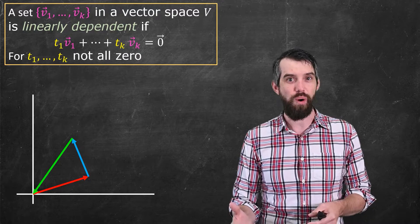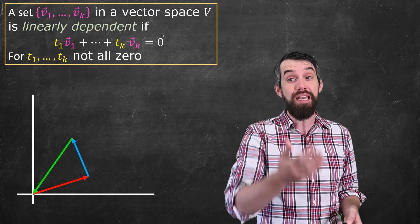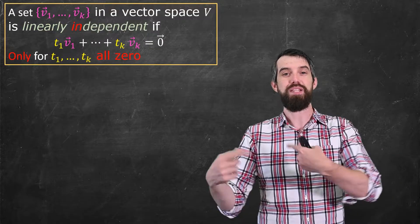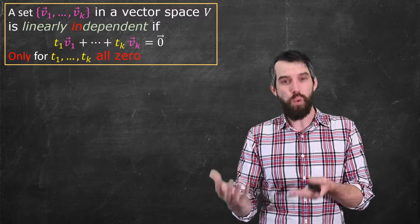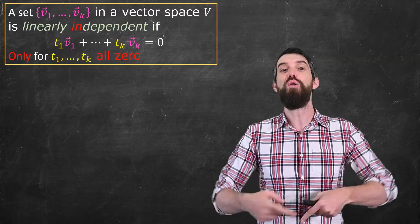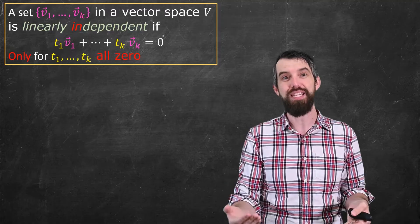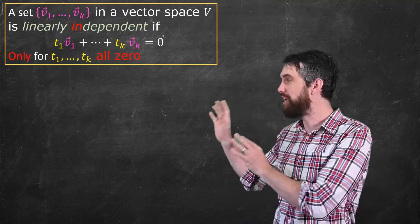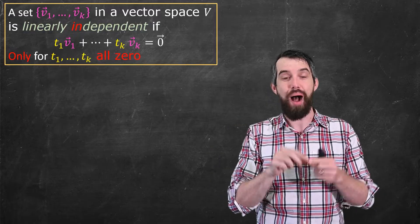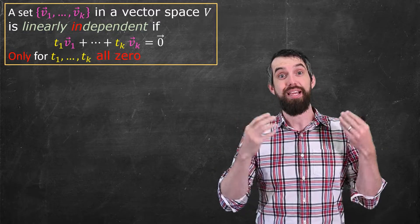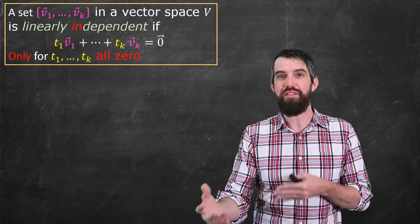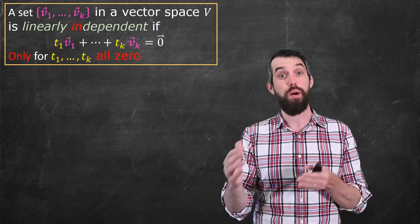Linear independence is almost the exact same definition — just the opposite. The only way the linear combination can equal zero is if all of the coefficients t1 through tk are individually zero. This says there's no way to add up those vectors that gets to zero unless the length of all of them is set to exactly zero by those coefficients. We need to figure out what this means in the context of polynomials.